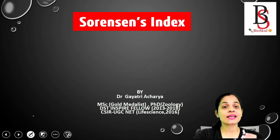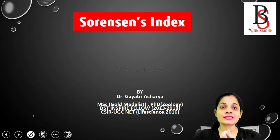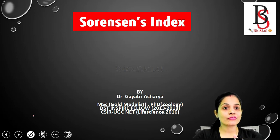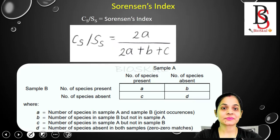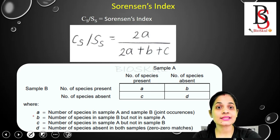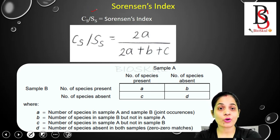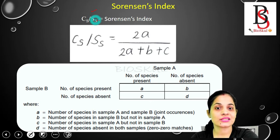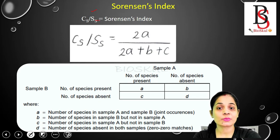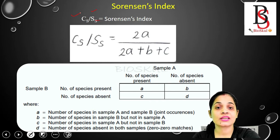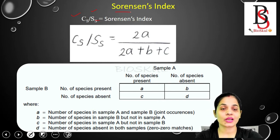Sorensen's index is a type of similarity coefficient index which is used to measure the similarities between communities. It is represented by S, where S stands for the similarity coefficient. Sometimes it is also represented by Cs, where C is for community and the subscript S is for Sorensen's.